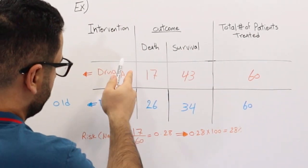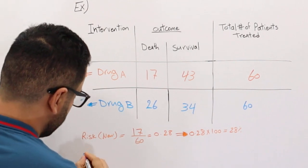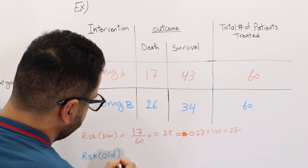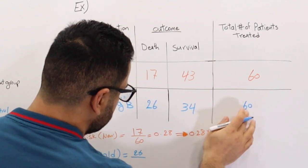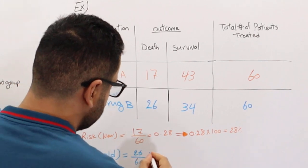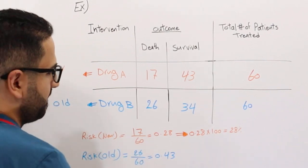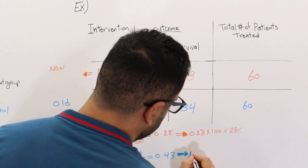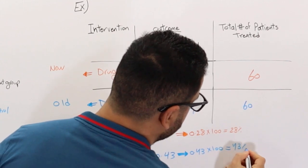Now let's find the risk for the old medication already on the market. The risk equals 26 over 60, which gives us 0.43. Multiplying by 100 gives us 43 percent.